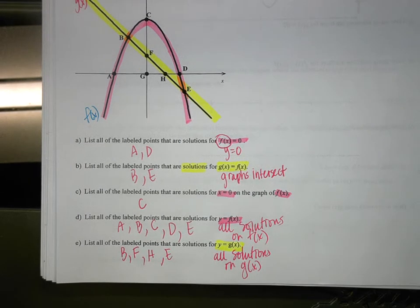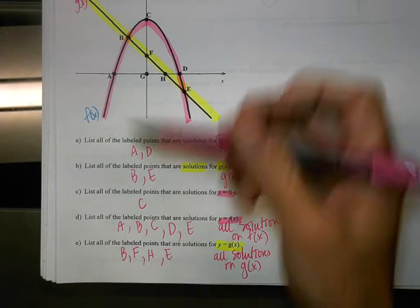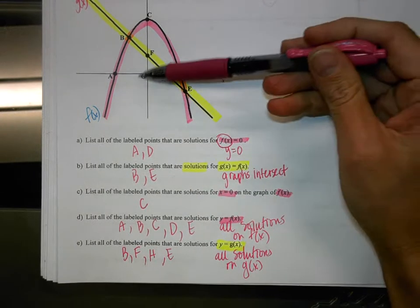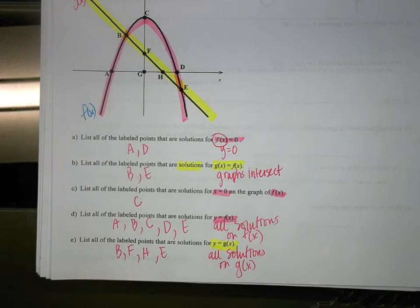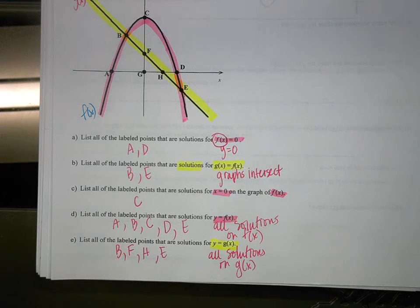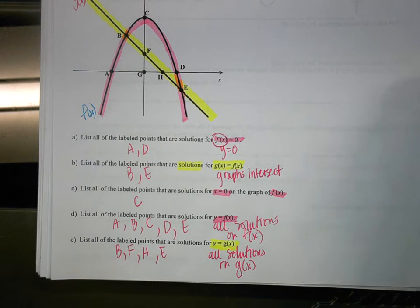You'll notice G isn't on either of the functions — it's just a point on the graph but was never part of a question we needed to answer. Sometimes some of the letters don't actually fit into any of the questions, and that's okay.